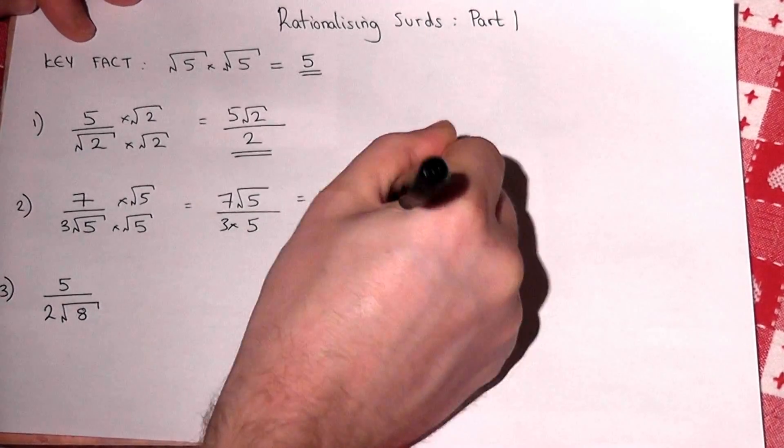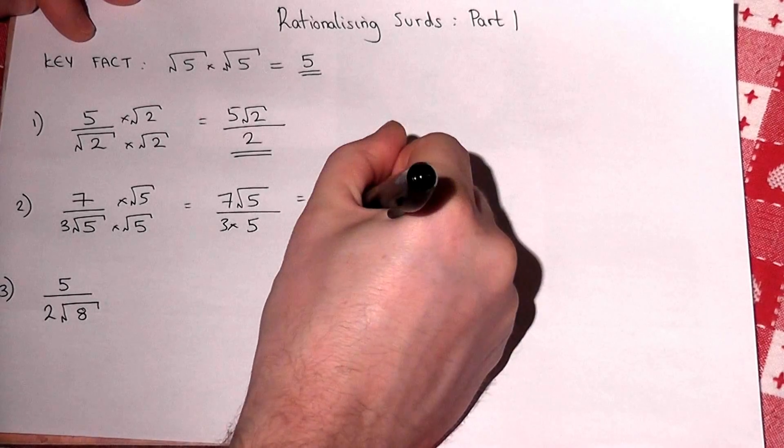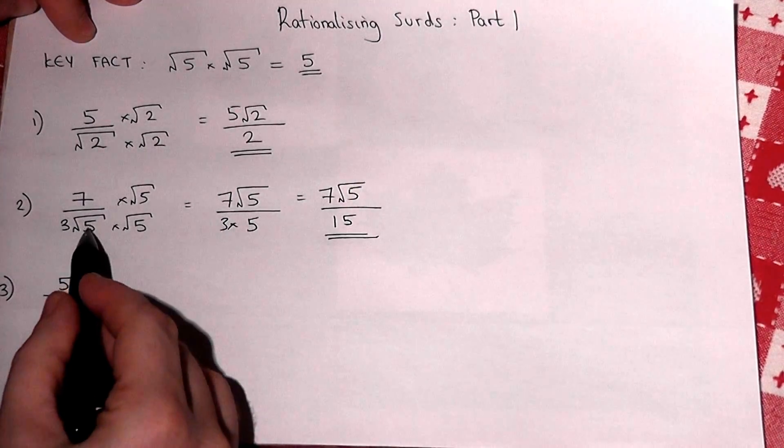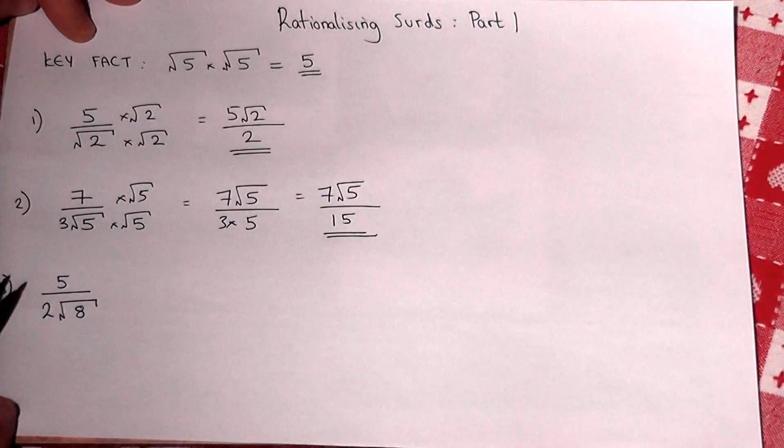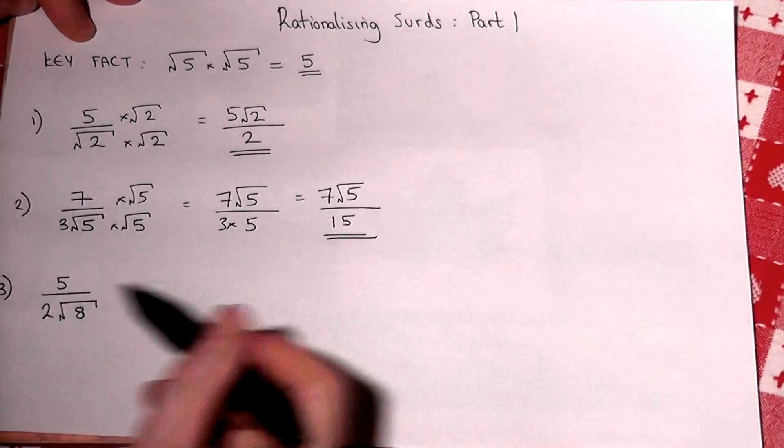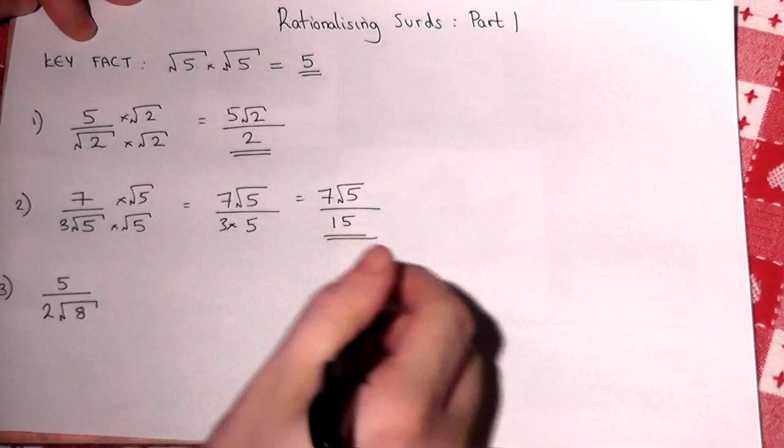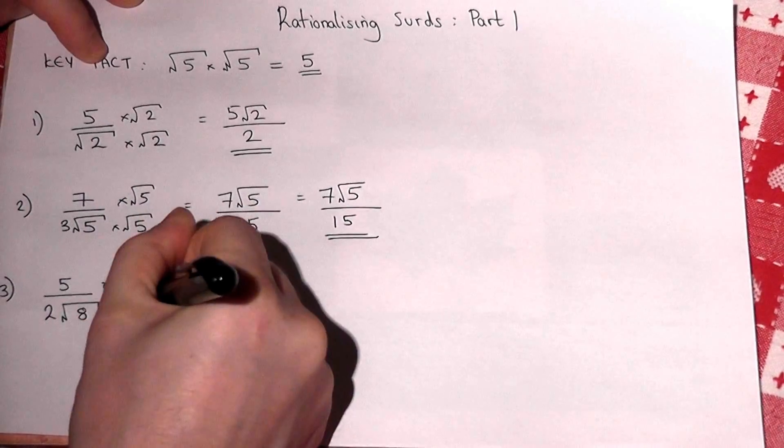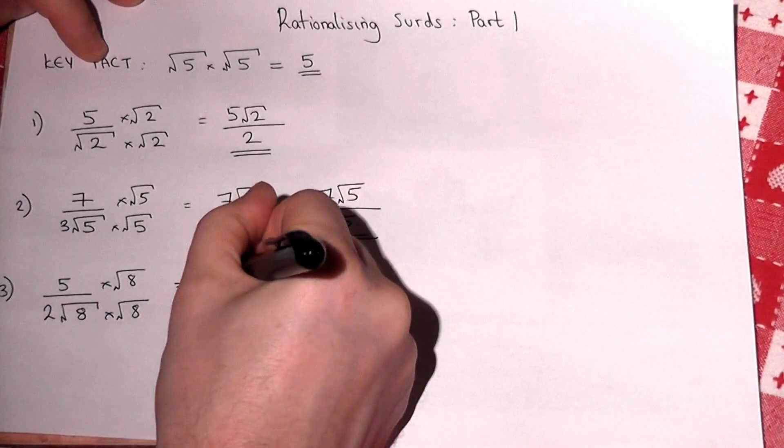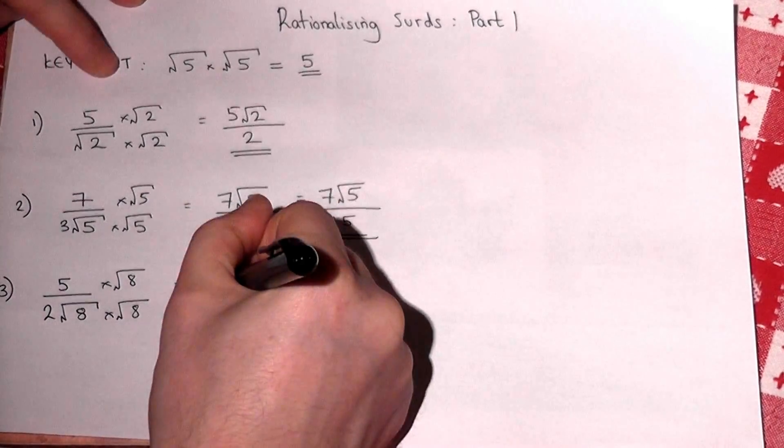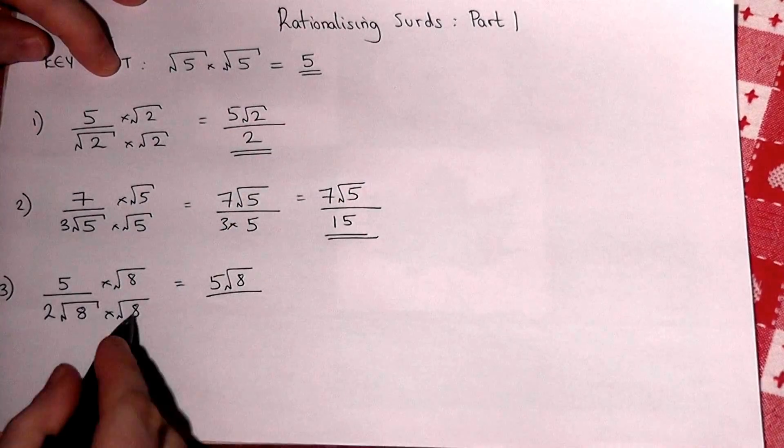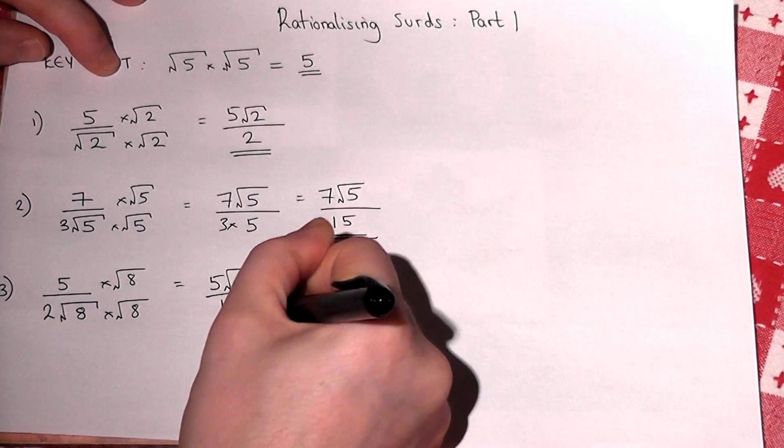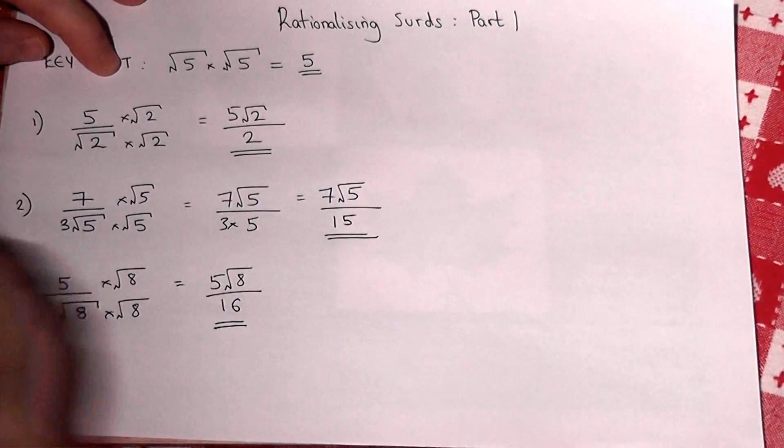In the third example, what we can do is we times by √8. So we get 5√8. Now √8 × √8 is 8, there's a 2 there, so we get 5√8 over 16. Two times eight is sixteen. Now that's not actually the best answer.